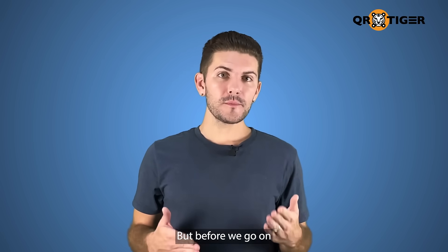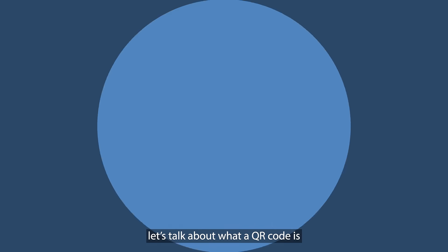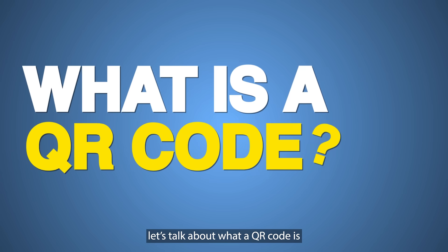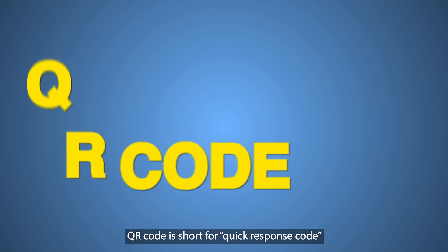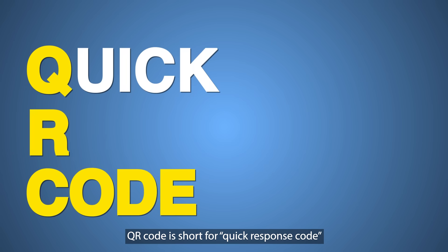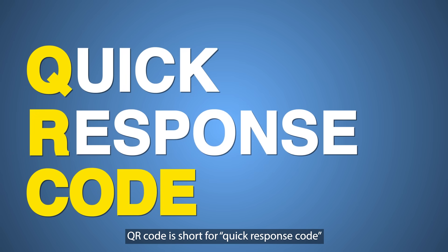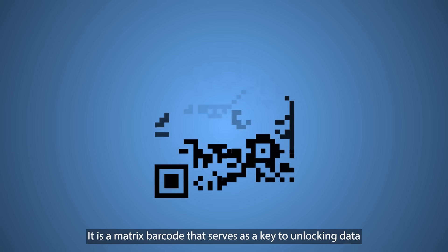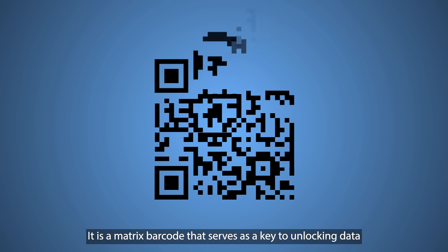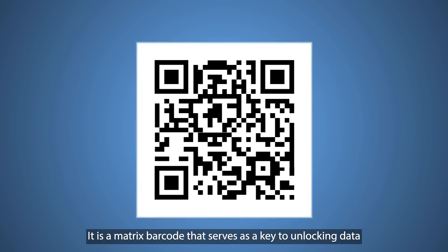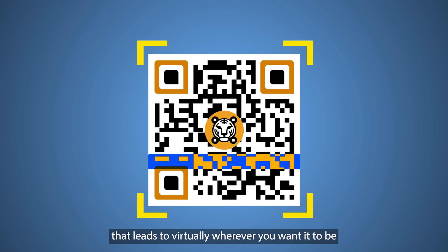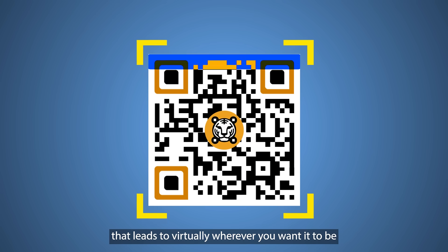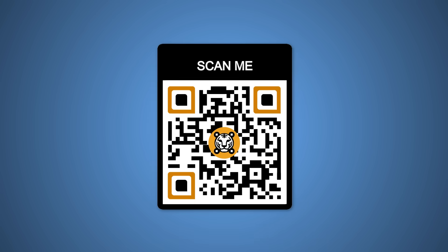Before we go on, let's talk about what a QR code is. A QR code is short for quick response code. It's a matrix barcode that serves as a key to unlocking data that leads to virtually wherever you want it to be.